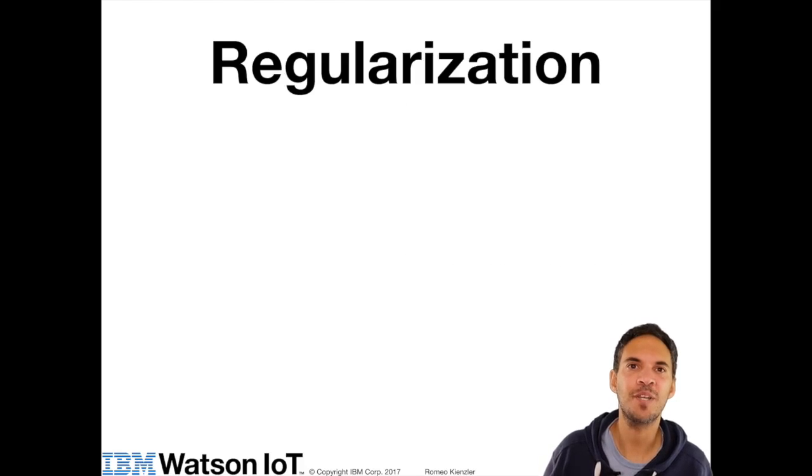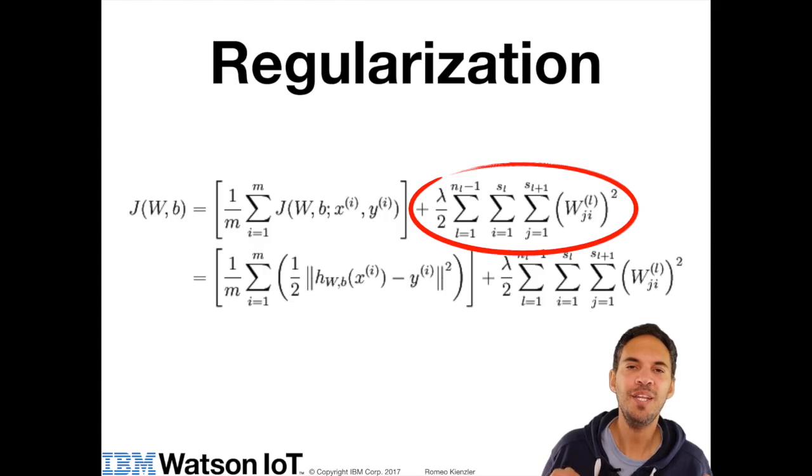The second thing you can do is regularization. Regularization is basically a way to penalize high weights. You don't have to understand everything here, but the idea is you have your cost function, and on the right-hand side, you are basically summing over all the weights and all layers of the neural network.